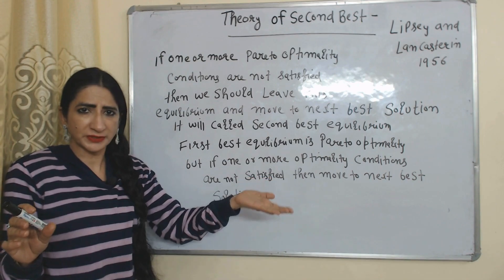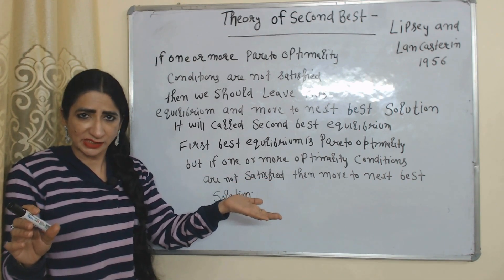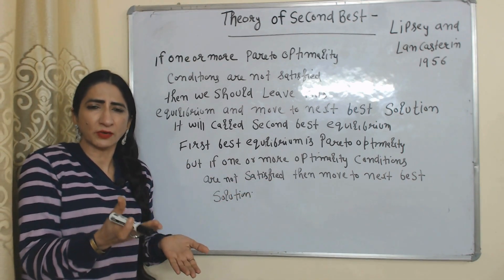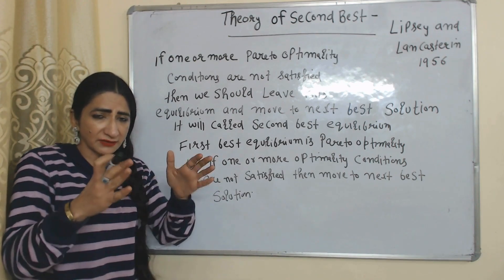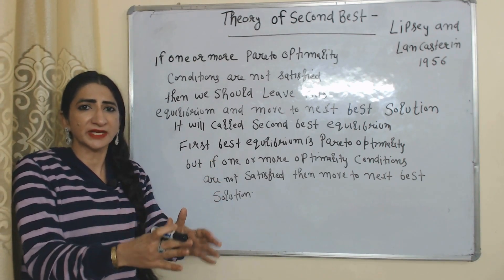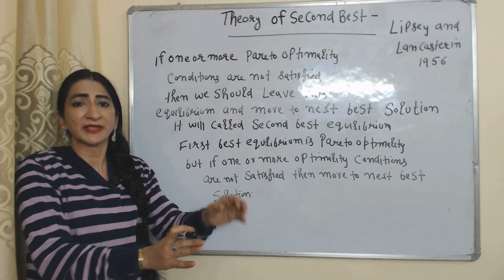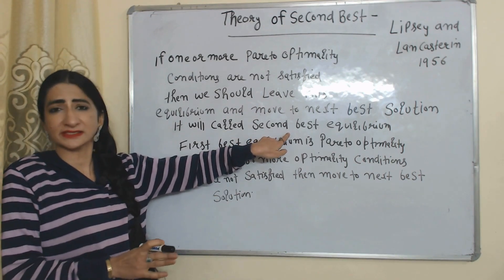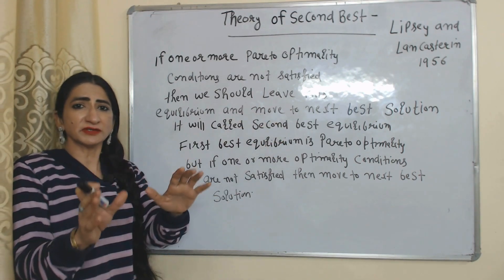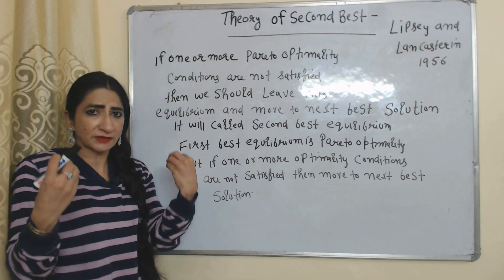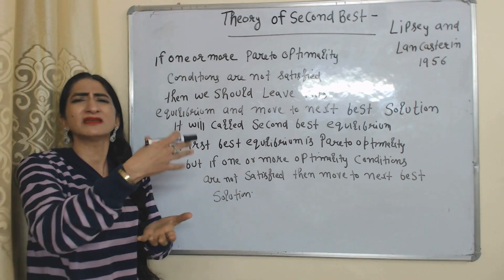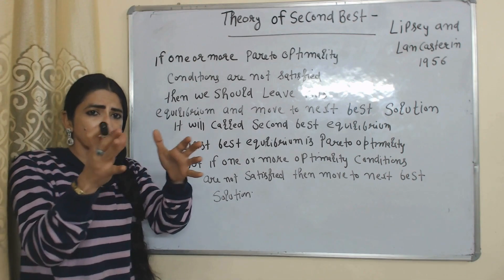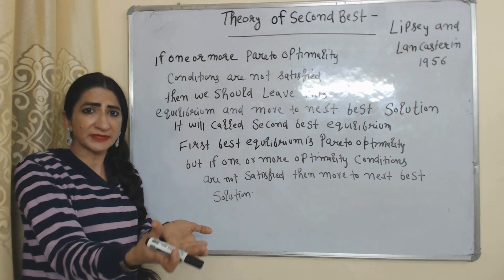According to this theory, if one or more Pareto optimality conditions are not satisfied — or if we are not able to achieve the Pareto optimality equilibrium point — then we should leave this equilibrium and move to the next best equilibrium. This next best equilibrium will be called the second best equilibrium. Achieving Pareto optimality is our first best equilibrium, but if for any reason we are not able to achieve it, we should move to the second best equilibrium.